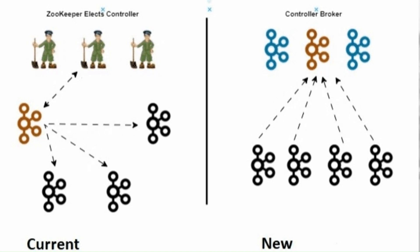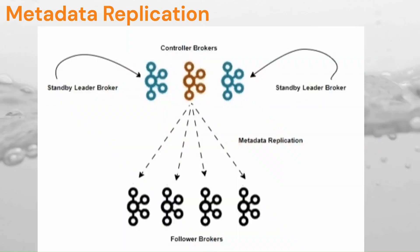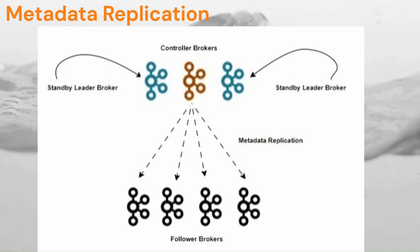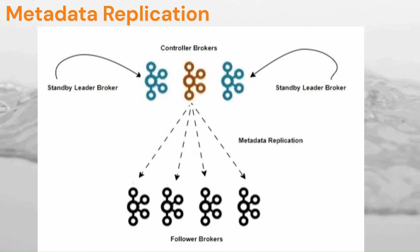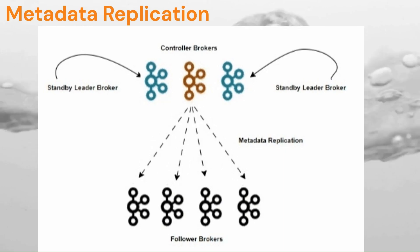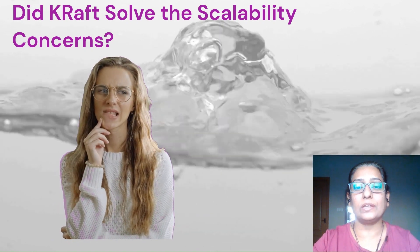Kafka Raft Metadata mode eliminates the need for a separate cluster. The Raft quorum consists of a set of brokers each maintaining a copy of the metadata. It works by selecting a leader broker — at any point there will be one active leader and standby leaders; if the active leader fails, a standby takes over. The leader broker replicates metadata to all brokers, and when it receives a request to change metadata, it appends the change to its own log, replicates it, and once it receives acknowledgement from the majority of brokers, it commits the metadata change.